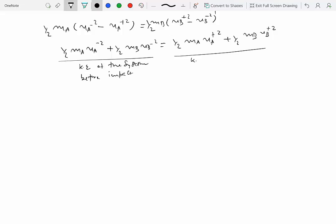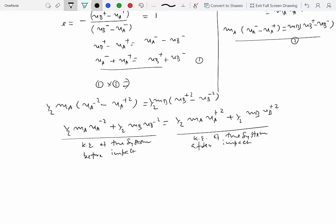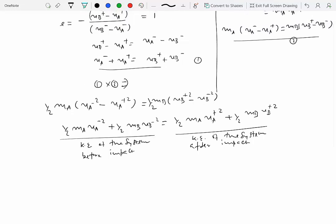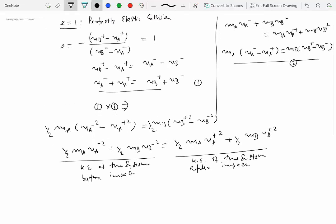And the right side is the kinetic energy after impact. Assuming no other forces like gravity, the only energy in the system is the kinetic energy of the particles, so you can clearly see that kinetic energy before and after is conserved. However, this relationship only holds when E equals 1.